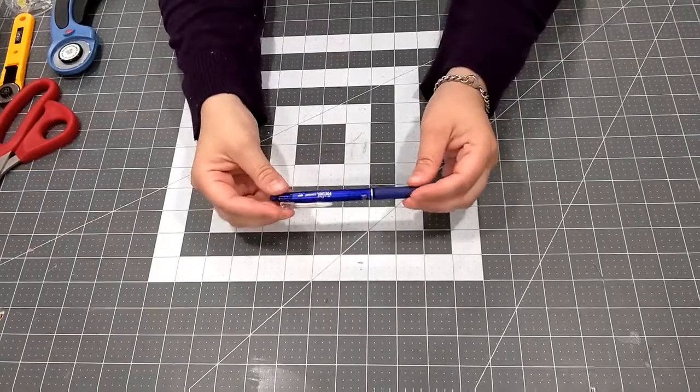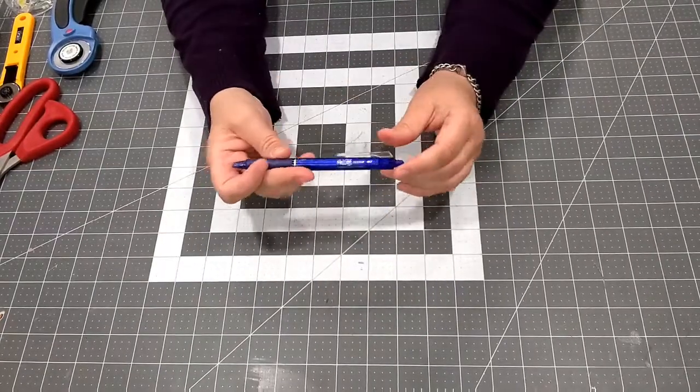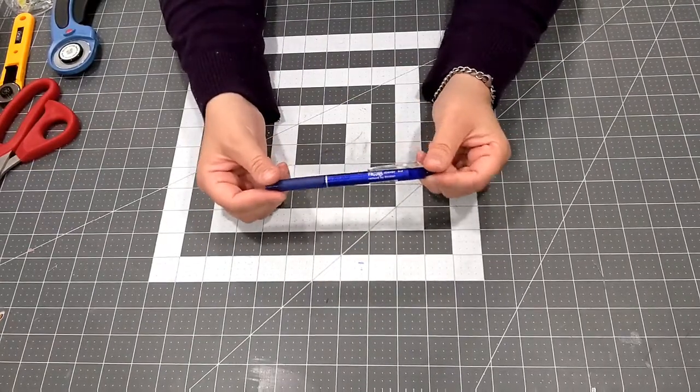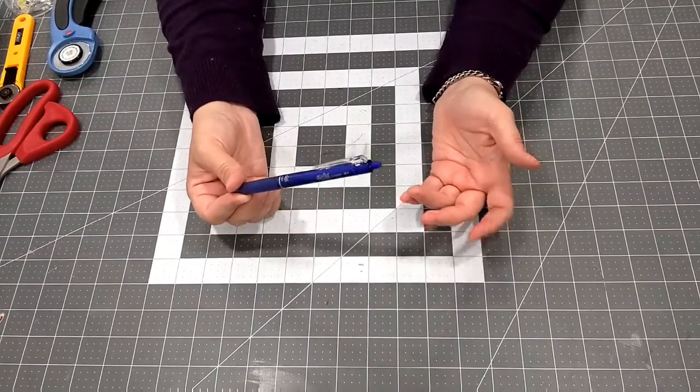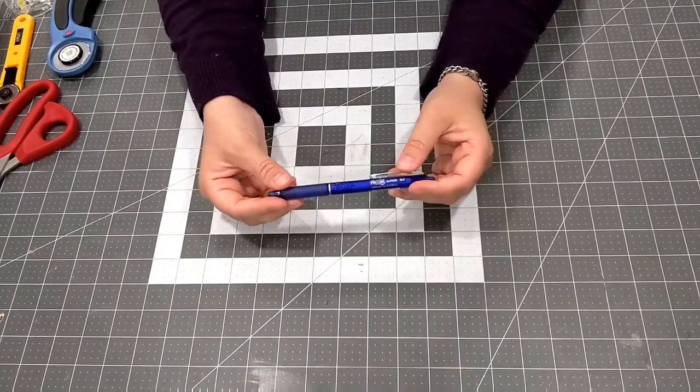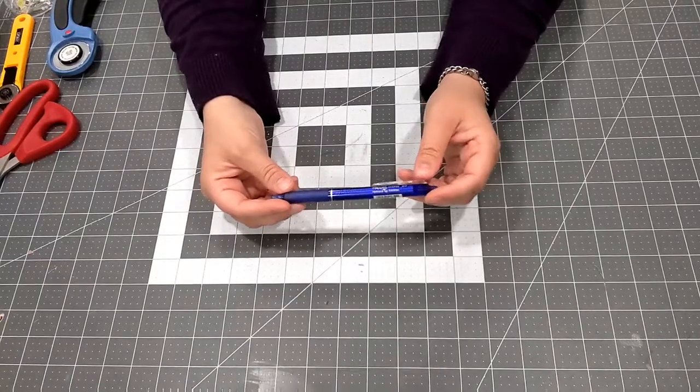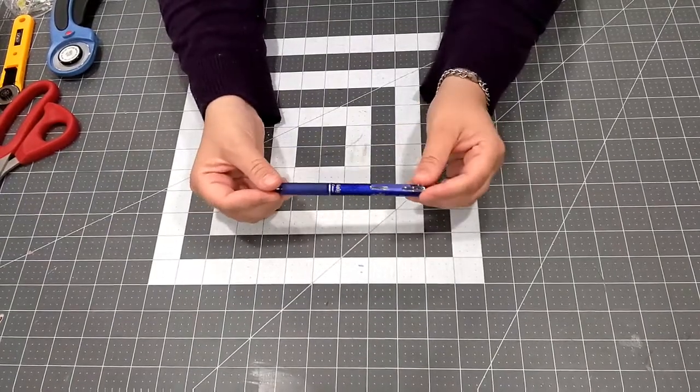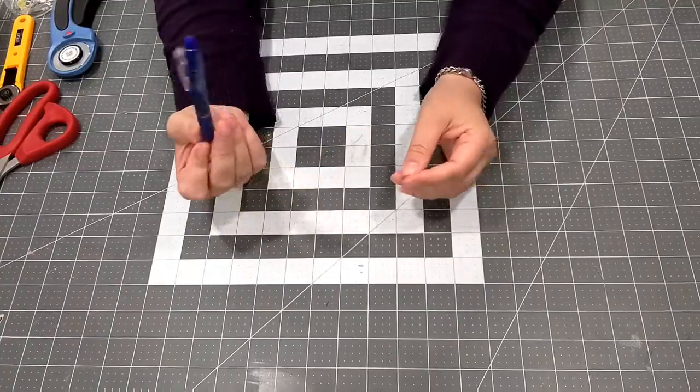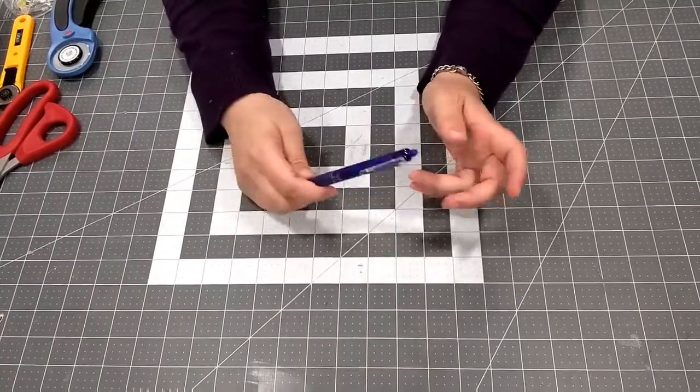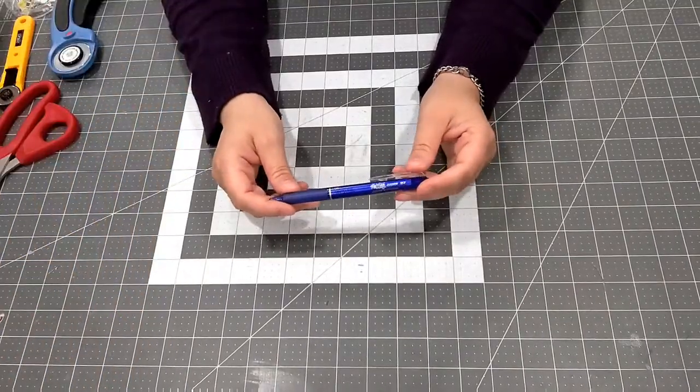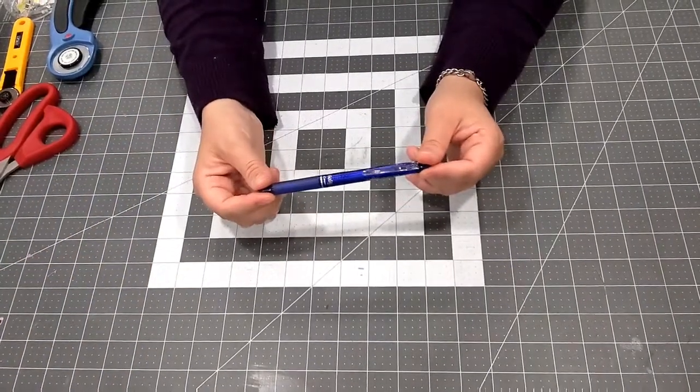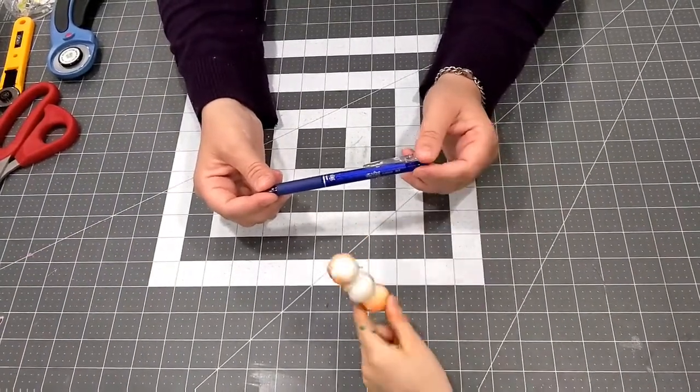And last but not least is this friction pen. It erases with heat or disappears with heat, so I use it instead of tailor's chalk because I hate tailor's chalk—it gets all over the place, it's messy. One thing I've heard about these is sometimes in the sun the marks can reappear, but I use it to mark on the inside of my fabric or on the selvage.